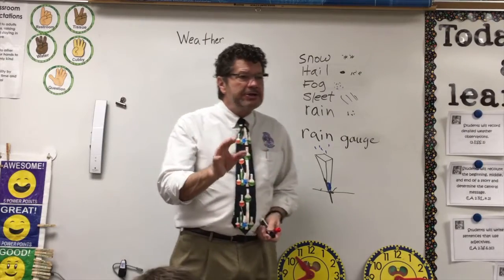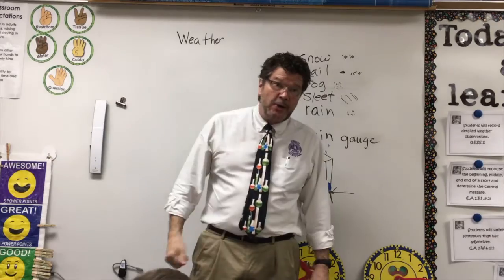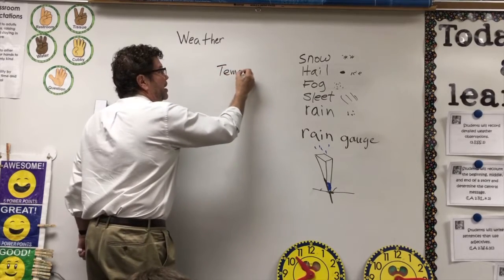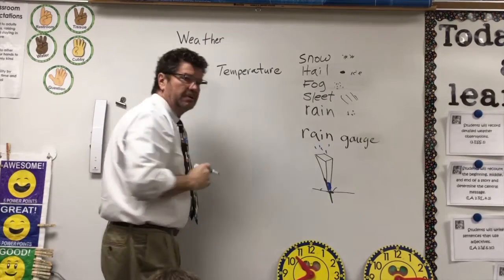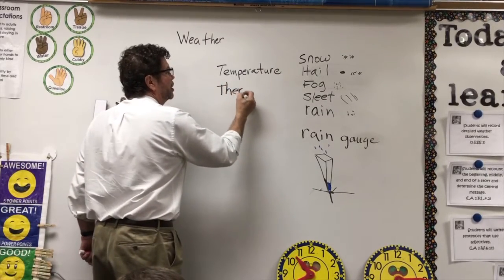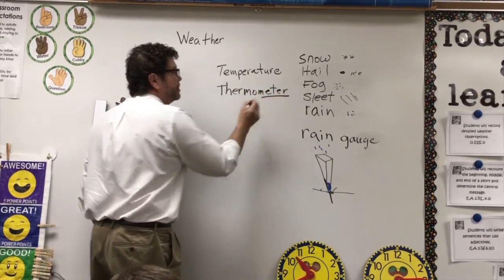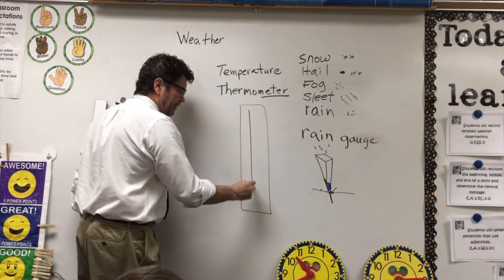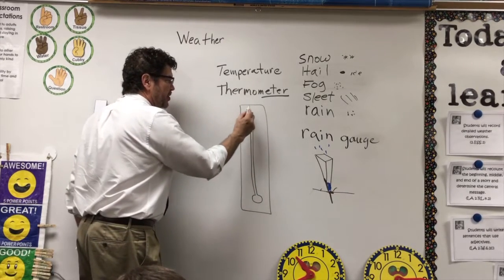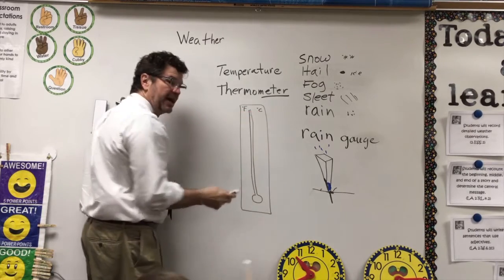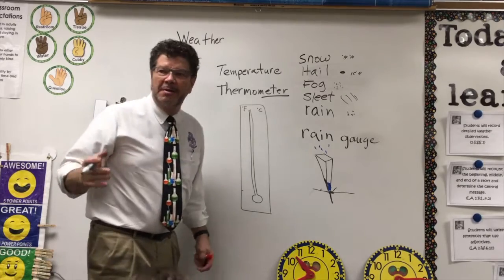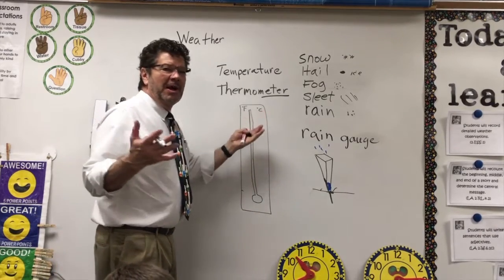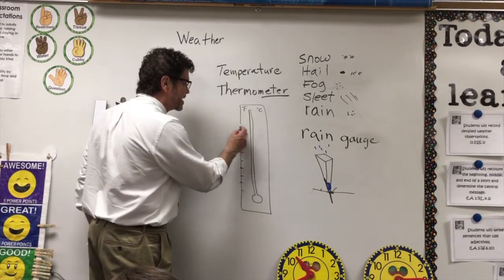Another tool tells us if the weather is really hot or really cold — it measures temperature. What do you think that tool is called? A thermometer. The word 'meter' means to measure and 'therm' means heat. A thermometer sometimes has an F on one side and a C on the other side because there are different scales. What does the F stand for? Fahrenheit. What does the C stand for? Celsius.